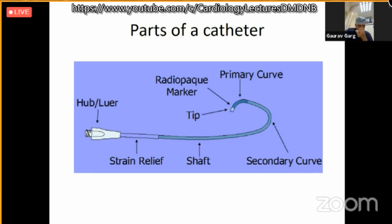Regarding the curves of the catheter: it has a primary curve, secondary curve, and some catheters have tertiary curves also. The primary curve is present close to the tip. In the case of a right Judkins catheter, the primary curve is given so it can fit easily into the right coronary ostium. The secondary curve is given so the catheter can fit easily into the aorta, and accordingly the numbers are given to the right Judkins catheter.